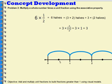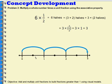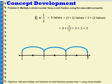Here's an example of how that would look on a number line. My number line goes all the way to 3. I have 2 halves here — that makes 1. I have 2 halves again — that makes 2. And then I have 2 more halves — that makes 3.